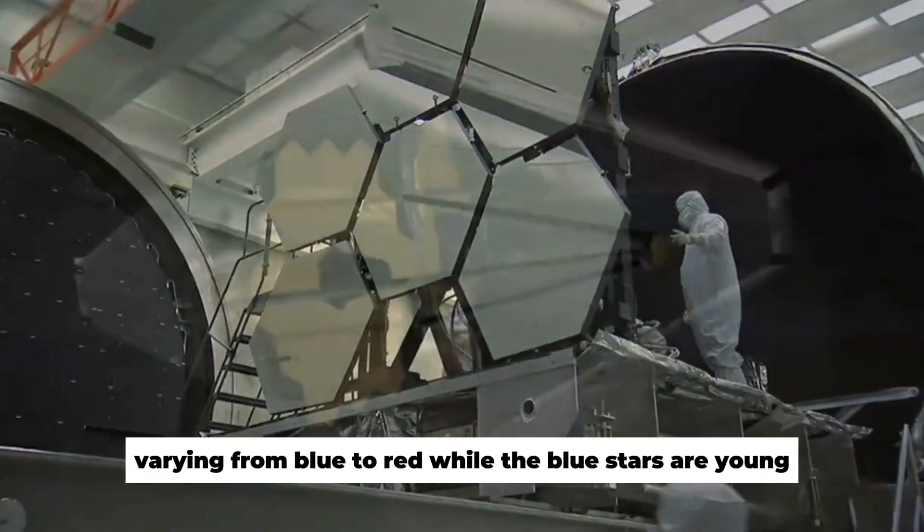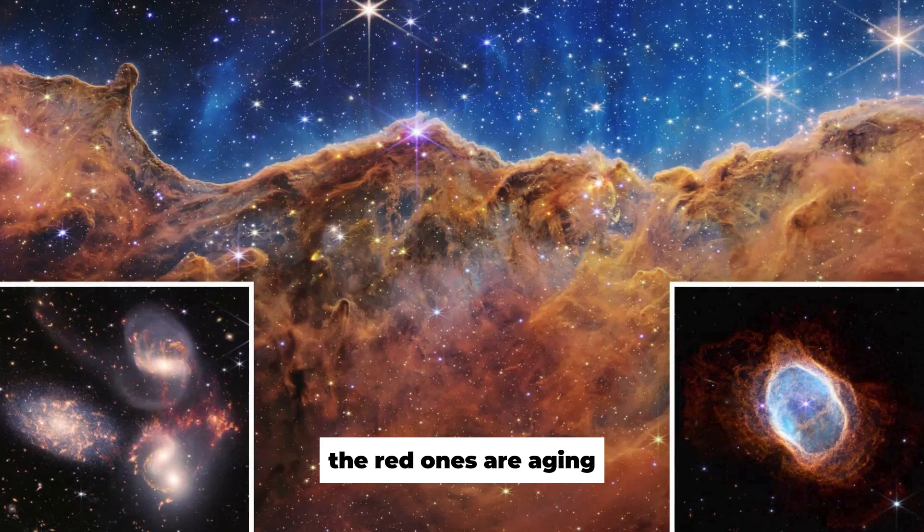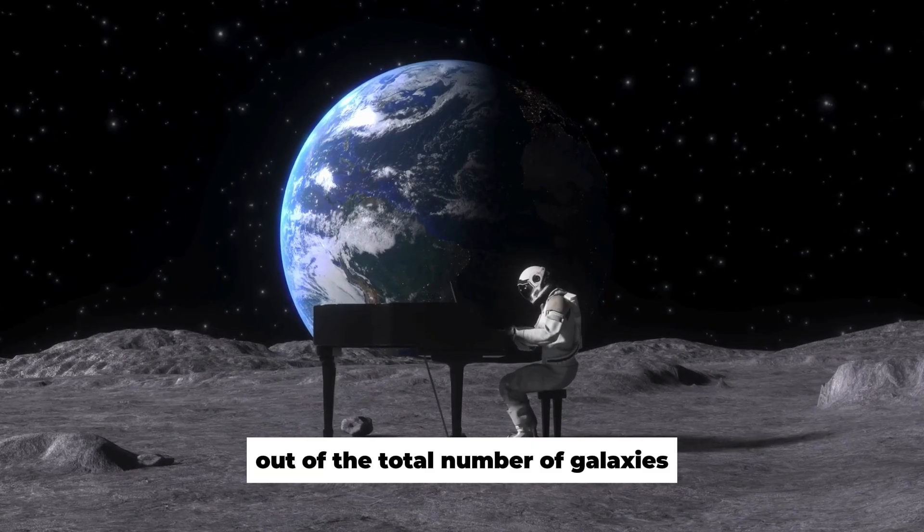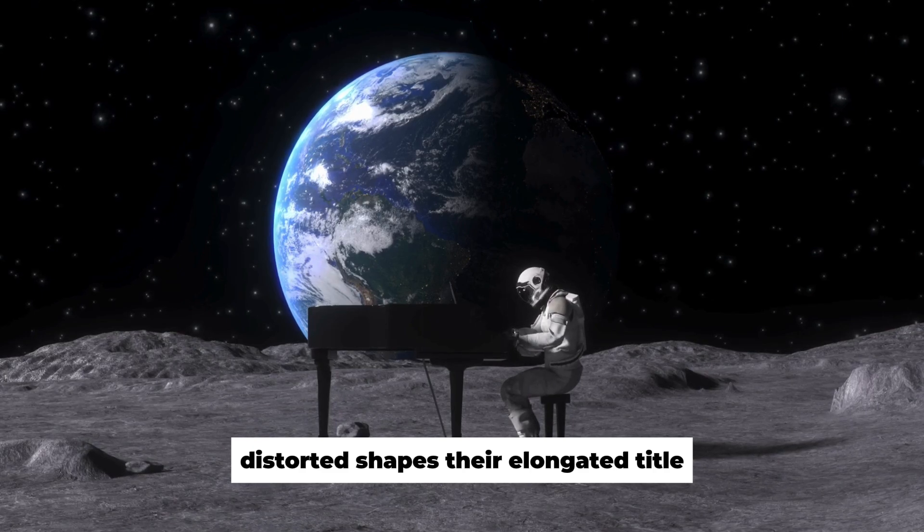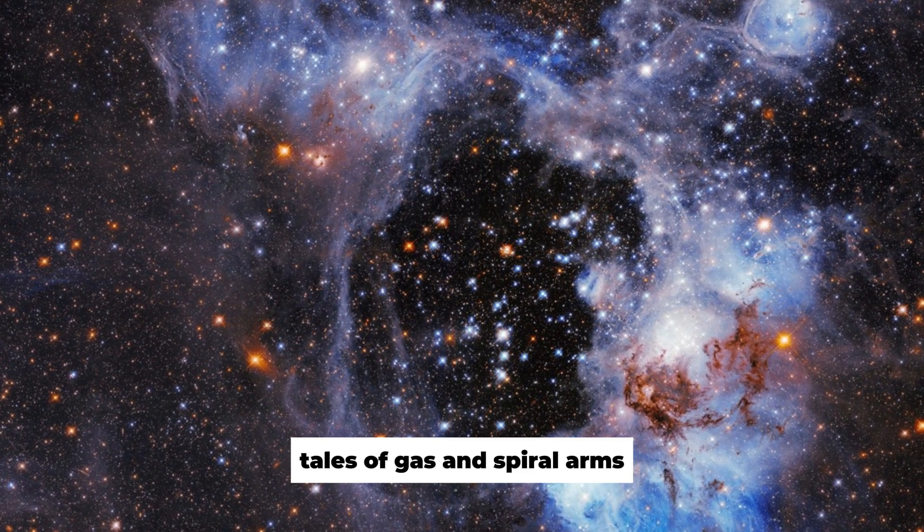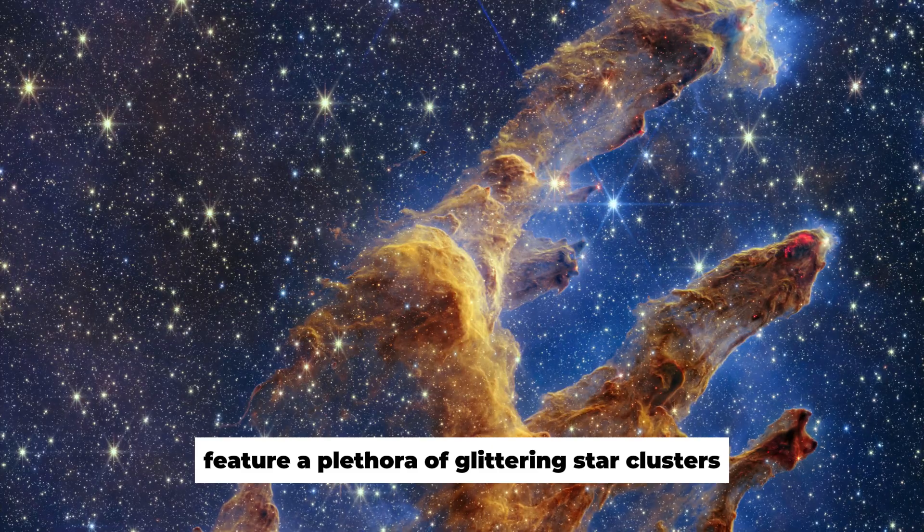While the blue stars are young, the red ones are aging. Out of the total number of galaxies, three of these come with irregular, distorted shapes. Their elongated tidal tails of gas and spiral arms feature a plethora of glittering star clusters.